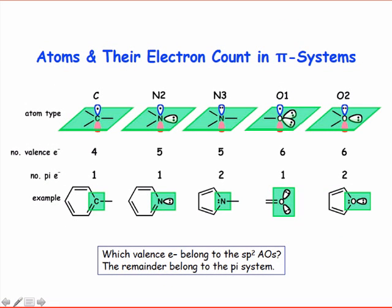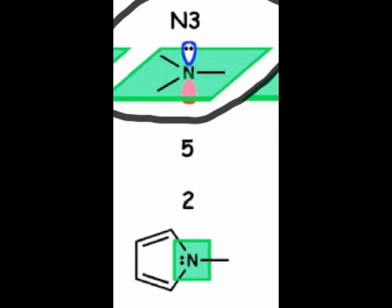If we simply add an electron and proton to this carbon, we arrive at a three-connected nitrogen with a lone pair in its 2pz orbital. This nitrogen atom, which we'll call the N3 nitrogen, donates two electrons to the pi system. The lone pair in the 2pz orbital is not basic because it is involved in aromatic pi bonding.